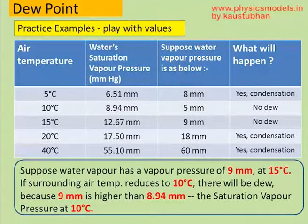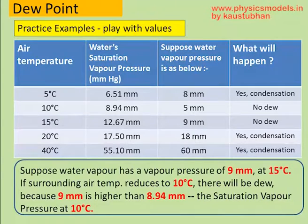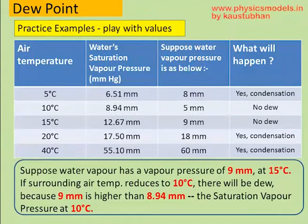The third column gives hypothetical values to clarify the concept, and the fourth column indicates whether dew drops will form or not. At 10°C, the saturation vapor pressure is 8.94. If we plug in 5 mmHg, that is much less than 8.94, so the air is dry and there won't be any dew. Similarly, if we take a vapor pressure of 9 mm at 15°C and cool the air to 10°C, then 9 is greater than 8.94, and there will be dew formation.